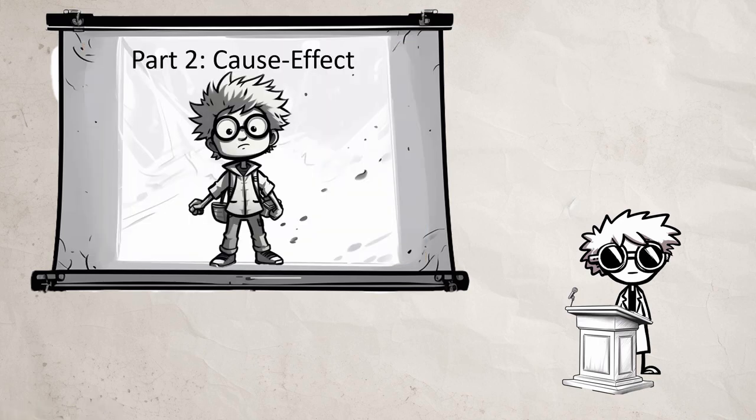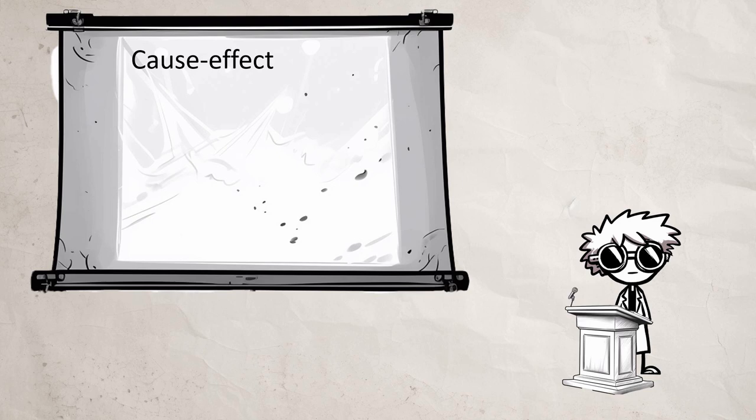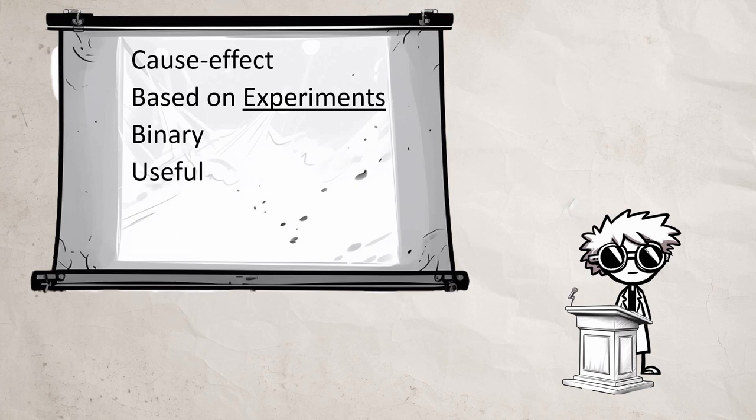When we are ready, we can start to understand cause and effect. This is the level we, hopefully, reach by high school. We're ready to move past stories for children, but perhaps not yet ready for advanced mathematics. This is the beginning of empirical science. This level of thinking is based on experiments, measurements, and observations. It tends to be binary, true-false, hard categories. It can be very useful to think this way, but it is inherently incomplete.